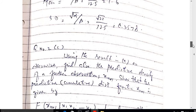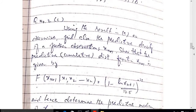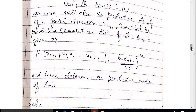For part C: using the result from part A, find the predictive density function for a future observation x_(n+1). Show that the predictive CDF of x_(n+1) given sample x_1 to x_n equals [1 − log(x_(n+1)) / 12.5]^(−20). Also find the predictive median of x_(n+1).